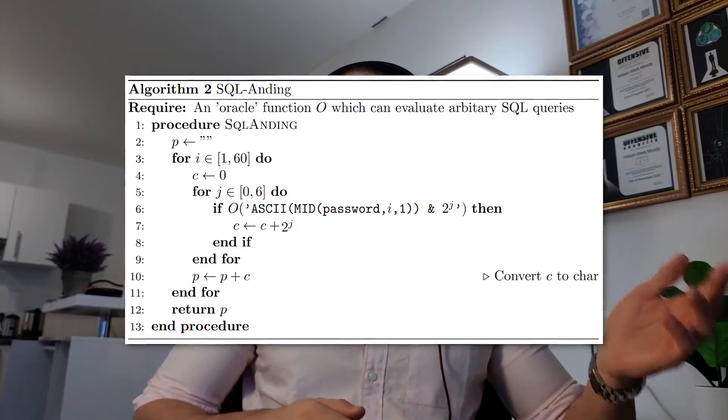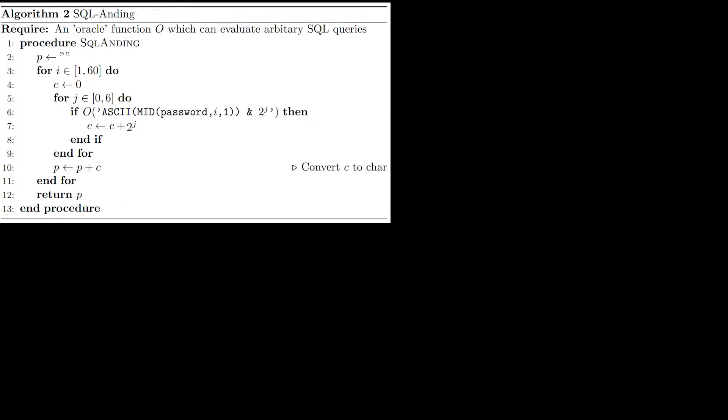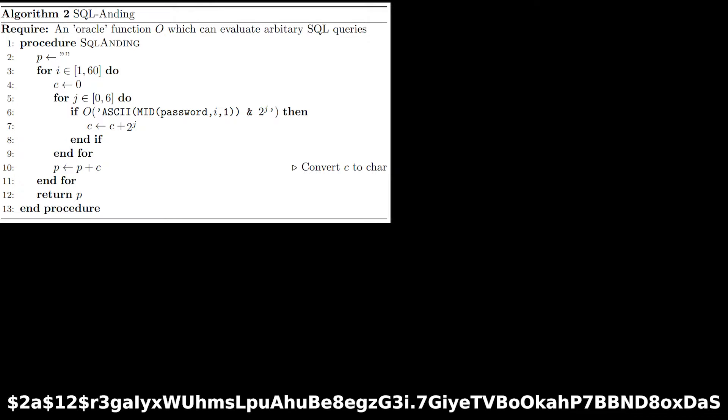The SQL anding algorithm works a little bit differently and involves thinking in terms of binary. This is how the pseudocode looks. Imagine we're targeting the same 60 character password as before. We assign an empty string to P and step into the first loop with I equals 1. Here we assign 0 to C and step into the second loop with J equals 0.